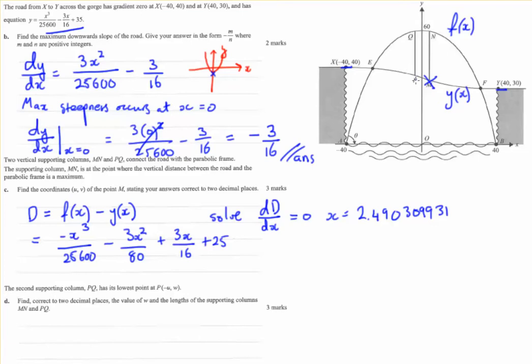So that's the x value where m occurs. Now, a trap for young players might be to sub that x value back into the distance to find that distance. He hasn't asked for that. It's asked for the coordinates of m. So we need to sub that x value back into y of x. So there's x and we need to find y of 2.49030, blah, blah, blah. And we need to find that value as well.